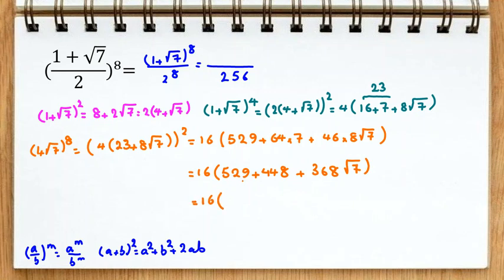Now, if we simplify more: 9 plus 8, 17. We have 1, 1 plus 4, 5 plus 2, 7. 4 plus 5, 9. Plus 3, 6, 8 root 7.